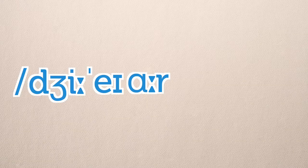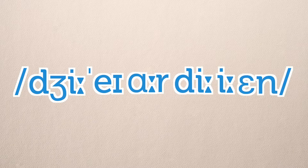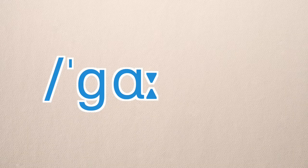Children can then start to read words by blending the sounds together to make a word. For example, do you see this word? If we read graphemes, it sounds like this: G-A-R-D-E-N. But if we read phonemes, it sounds like G-A-D-N.